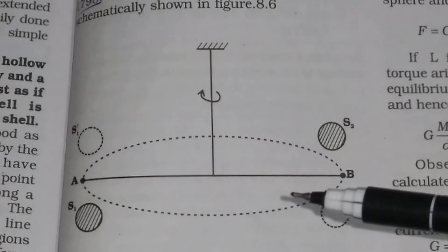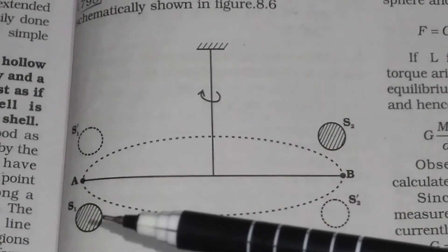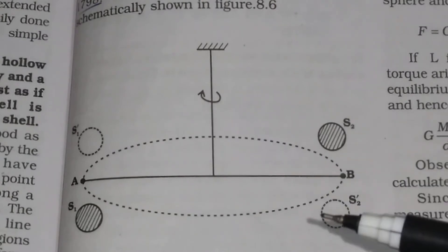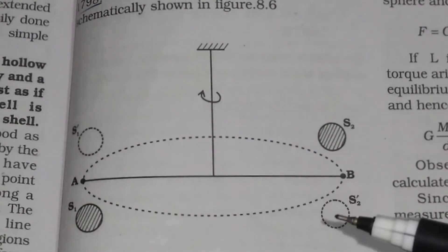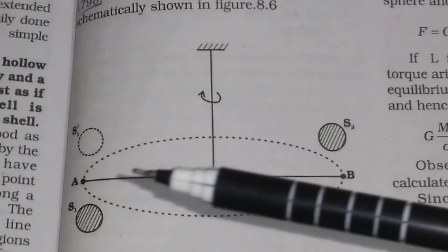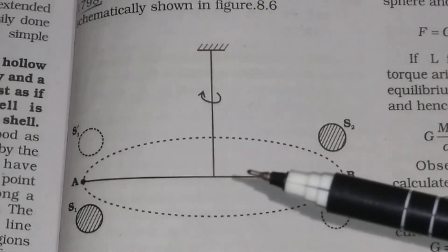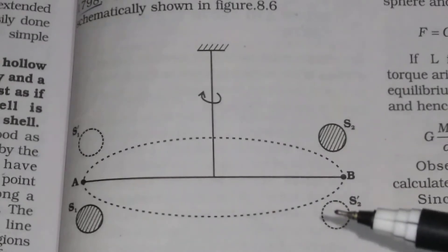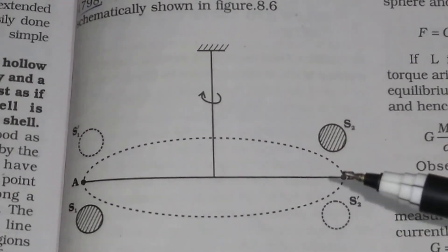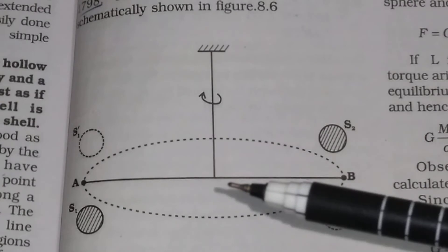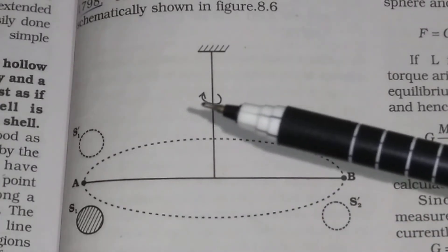In this experiment, suppose you keep the large spheres S1 and S2 in one position, and then move them to the other position. You will observe that the rod with the two small masses will rotate. Why will it rotate? Because there will be a gravitational force between the large mass and the small mass — a force in a certain direction along its line of action — producing a torque about the suspension axis.